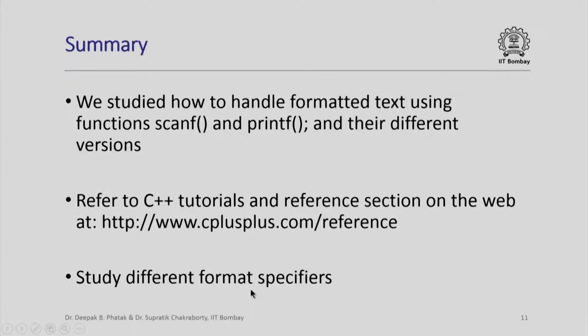In summary, we studied how to handle formatted text using functions scanf and printf and their different versions. Please refer to C++ tutorials and the reference section on the web, as this contains a complete description of all format specifiers. We note that scanf and printf have variations called sscanf and sprintf for handling input and output to a string, and fscanf and fprintf for handling input and output from text lines in files. In subsequent sessions, we shall use this feature to read large amounts of data from a text file and produce binary files. Thank you.